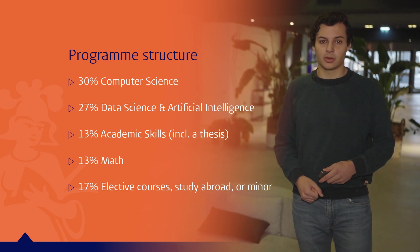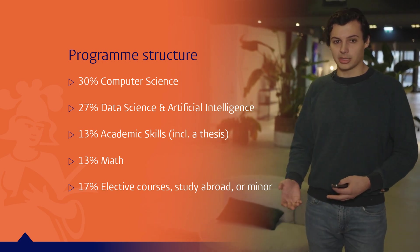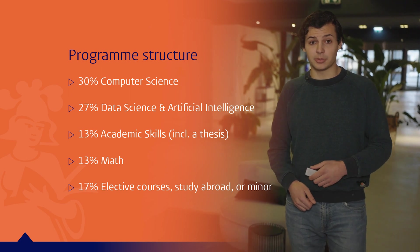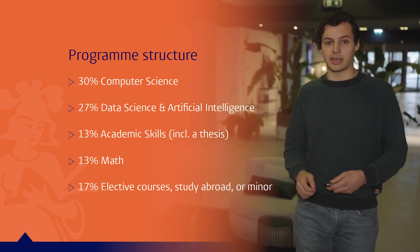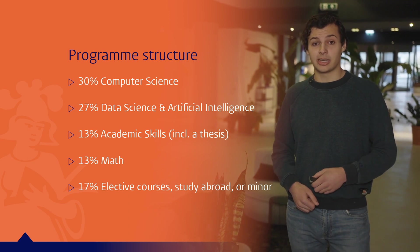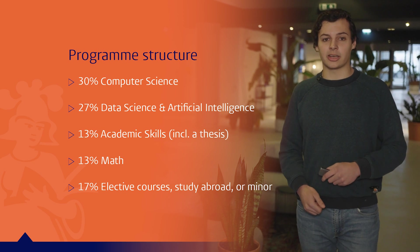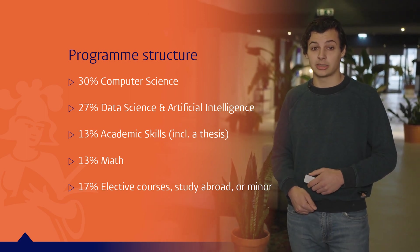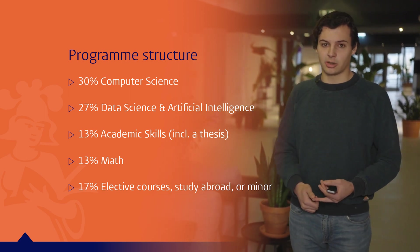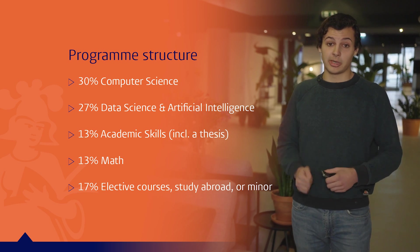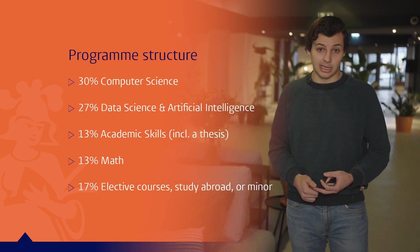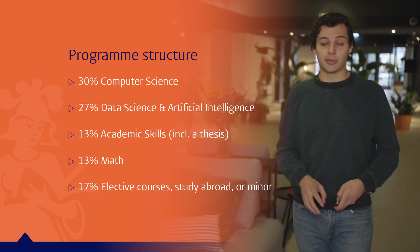The program consists of 30 percent computer science — so you will have introductions to programming and algorithms and data structure courses. Then 27 percent is true data science and AI subjects, so this could be reinforcement learning or neural networks. Then 30 percent is academic skills, although most of this is taken up by the thesis. Then another 13 percent is mathematics — linear algebra, calculus, and for example logic. And finally there are 17 percent of elective courses, so this is your minor or other electives you have chosen, and you could even do this abroad at a different university.